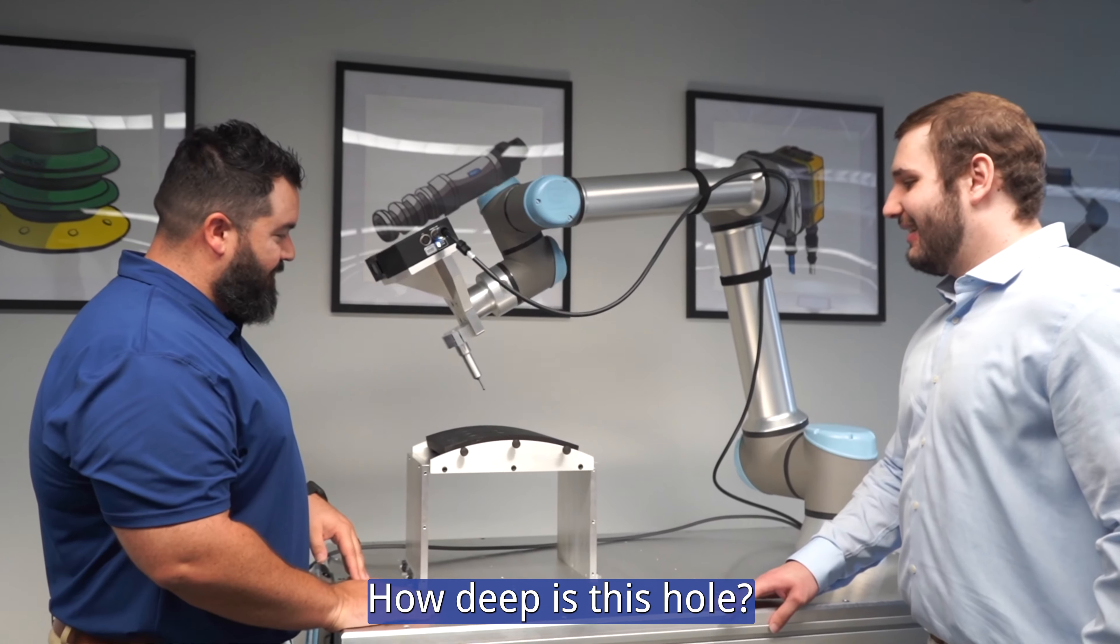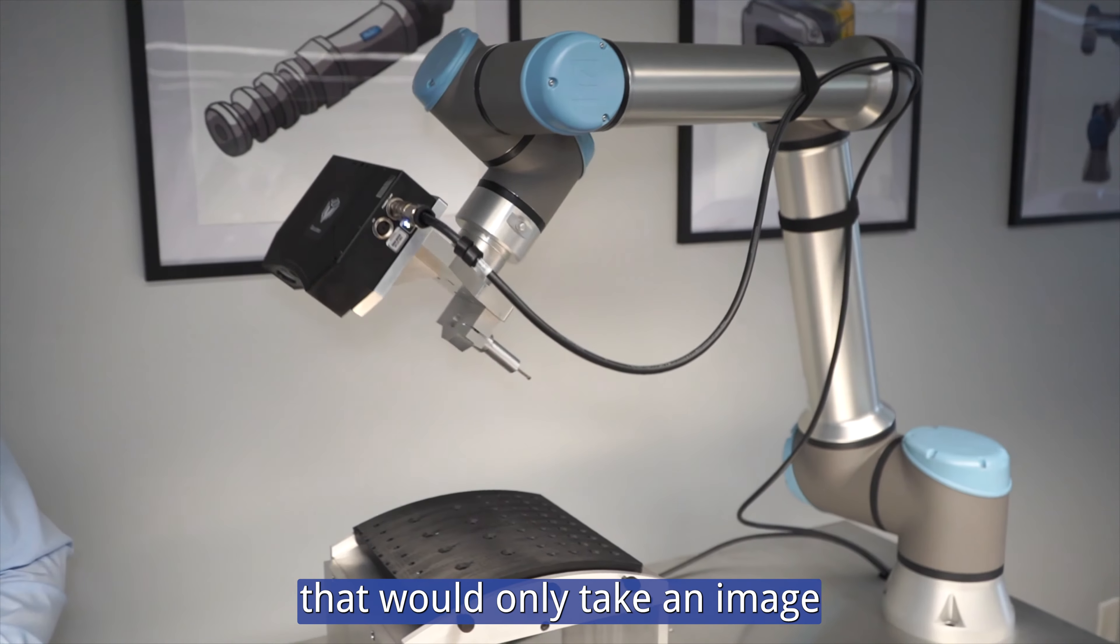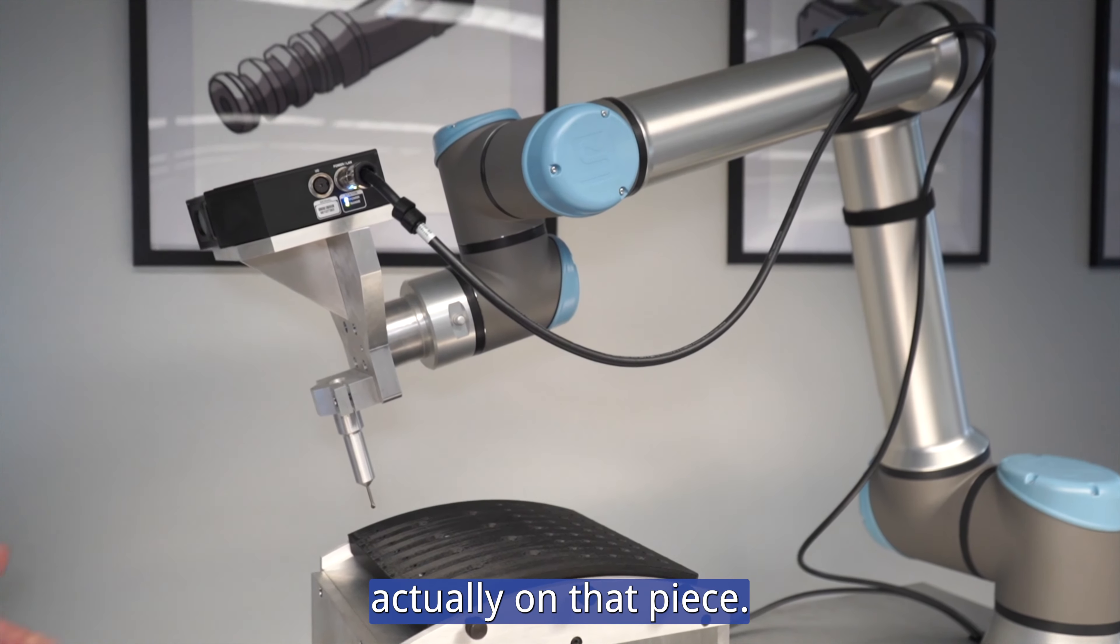How far away is this? How deep is this hole? What is the width of this hole? How big is the countersink? Compared to a 2D camera that would only take an image and give you the RGB values of each pixel, you would have no information about the data that was actually on that piece.